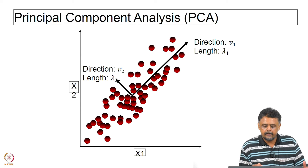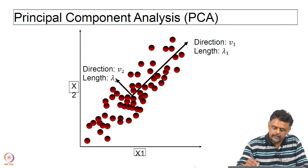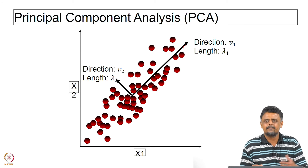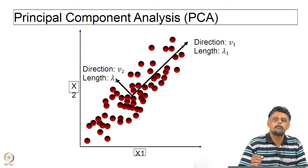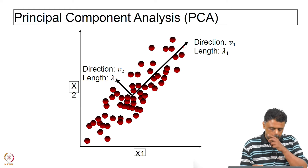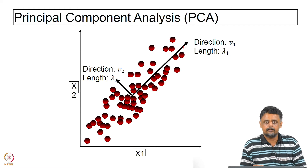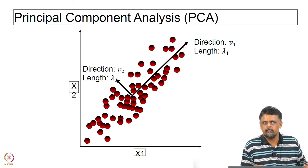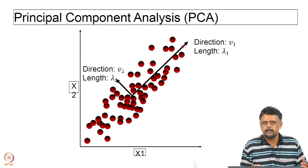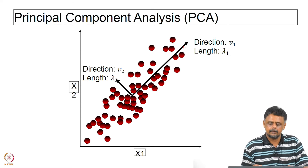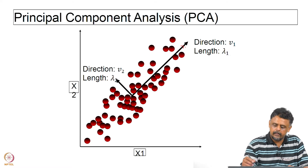So what do you need for that? We need two things: we need the direction of this axis — that is, we need this vector — and we need to know the length of the vector, because the length helps us determine whether the variance is high in that direction. The larger the length, the more the variance along that direction. Similarly, we need the length and direction of the other vector.